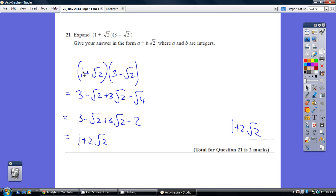So I like to start off with the 1 and do the 1 times 3 and the 1 times minus root 2. So that's clearly 1 times 3 is 3. One lot of minus root 2 is minus root 2. We then move on to the second term and do root 2 times 3 and root 2 times minus root 2.